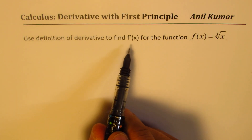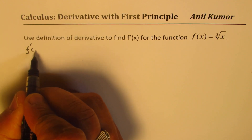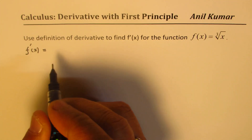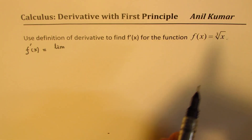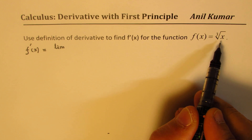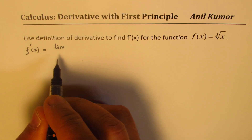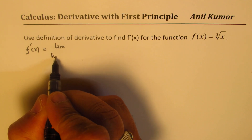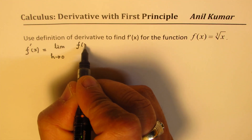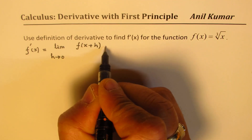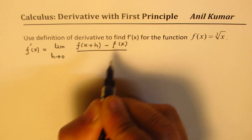By definition, the derivative of the function f'(x) is actually a limiting factor for the slope of the tangent line, taking any point in general x, h units away. So we write this as: limit as h approaches 0 of f(x+h) minus f(x) over h.